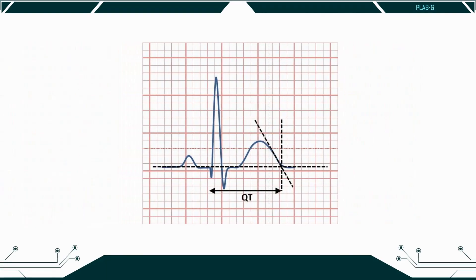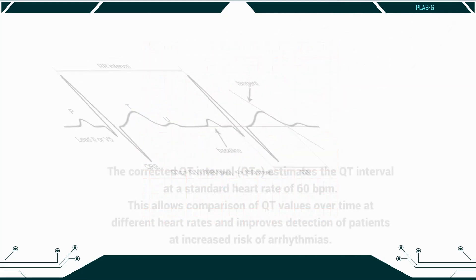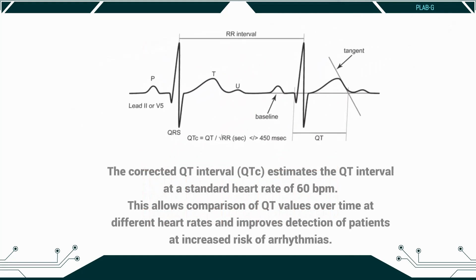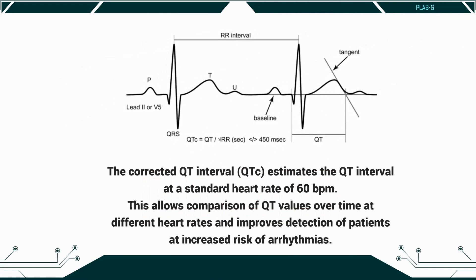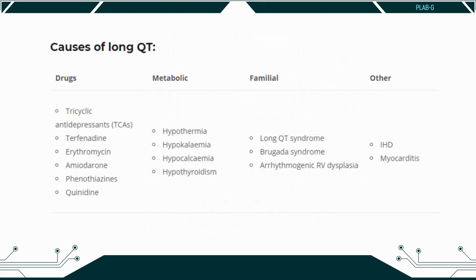The QT interval is the time between the start of the Q wave and the end of the T wave. The QT interval is corrected for the heart rate, giving the QTc. As a quick check, if the T waves occur over the halfway point between the QRS complexes, the QTc may be lengthened. A long QTc interval, known as long QT, is especially important to identify in patients with a history of collapse or transient loss of consciousness. These are the causes of long QT.